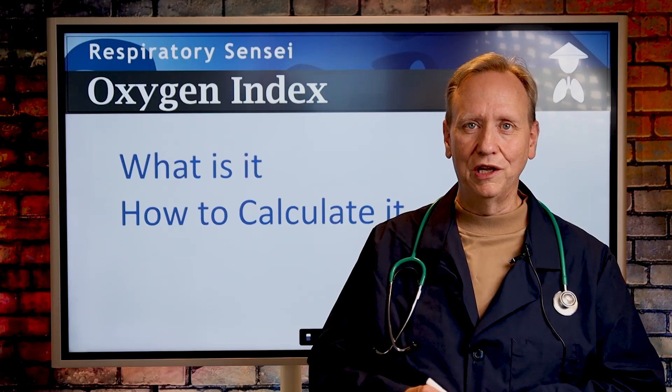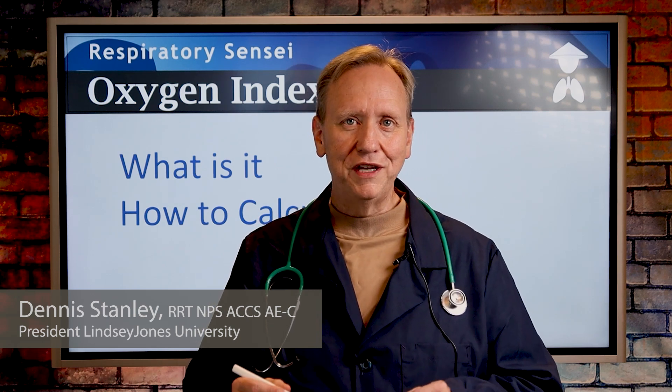We're here with the Oxygen Index, and we want to learn how to calculate it. But first, let me paint in your mind what we're actually calculating. When you think of somebody on a ventilator — and this relates only to ventilator patients — one thing we're trying to achieve is a very specific PaO2, or a specific oxygen level on the blood gas. The question that the Oxygen Index answers is: what does it cost to get that specific PaO2? We're using FiO2, mean airway pressure, PEEP, and many ventilator settings, so getting a specific PaO2 comes at a specific cost. The Oxygen Index is really looking at that cost.